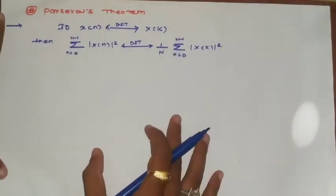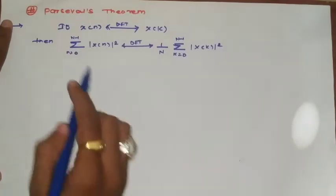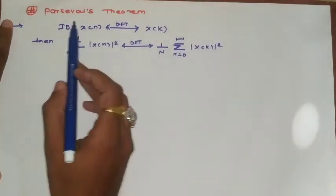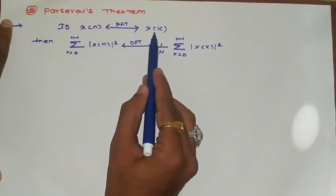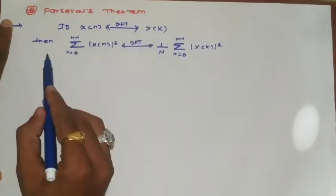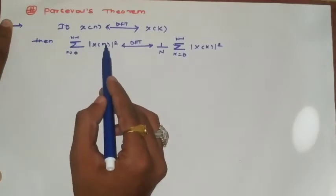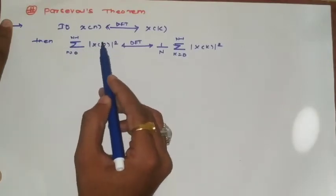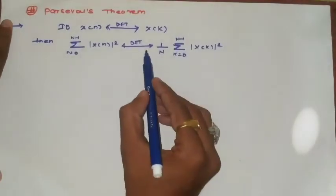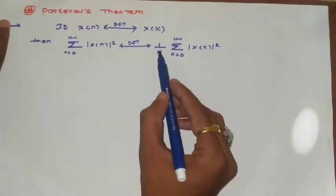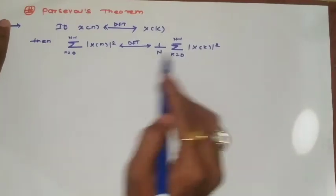The statement is: if we have an input sequence x(n) whose discrete Fourier transform is X(k), then the summation from n=0 to N-1 of |x(n)|² equals 1/N times the summation of |X(k)|². This shows the relationship for energy and power signals.